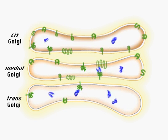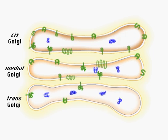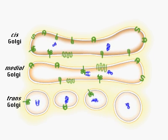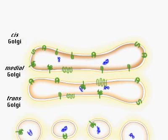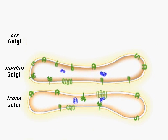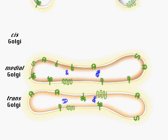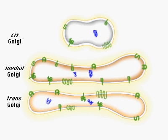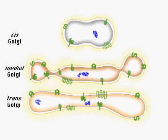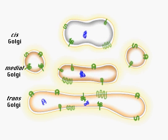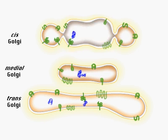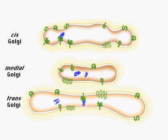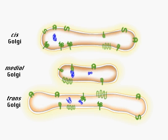In the cisternal maturation model, the cis Golgi matures to become the medial Golgi. A new cis Golgi is formed by fusion of ER vesicles. The maturation process includes retrograde vesicular transport of resident Golgi proteins.